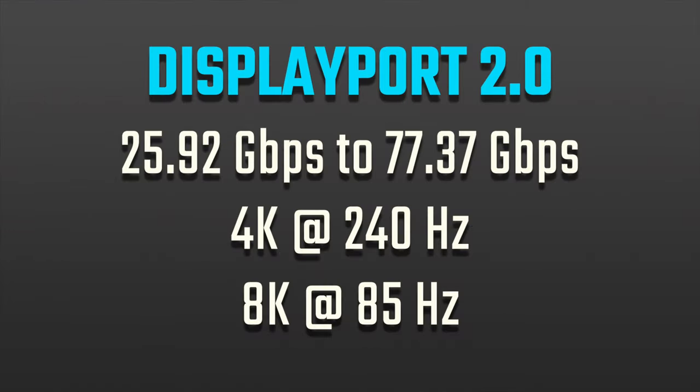Now let's look at the different specs of these two ports. We're going to stick to the latest versions available. The latest DisplayPort is version 2.0, which has a bandwidth of 25.92 gigabits per second all the way up to 77.37 gigabits per second.